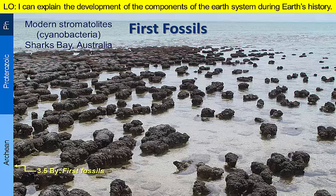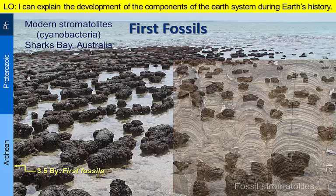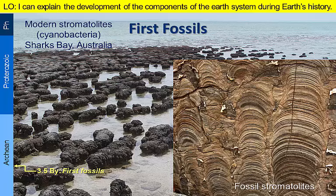Communities of cyanobacteria precipitated limestone between cells to form algal mats that created mound-like structures similar to the modern stromatolites in this image. So early bacterial life in the ocean starts to consume carbon dioxide and produce oxygen by photosynthesis. But as we will see next, none of this oxygen makes it to the early atmosphere, which was dominated by nitrogen and carbon dioxide.